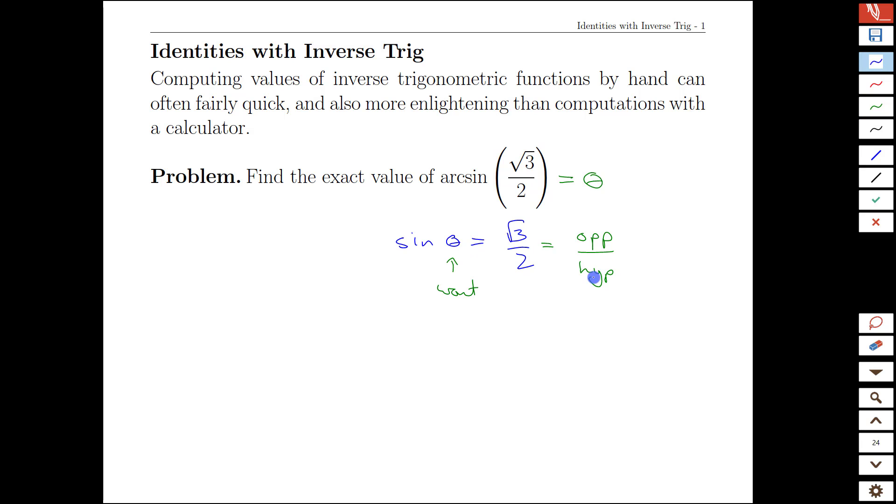Recalling that the sine is opposite over hypotenuse, you can actually draw a triangle with root 3 on the opposite side and 2 on the hypotenuse, and the angle here being the angle you're looking for. Now there's no way this is always going to work out exactly, but this triangle here should hopefully ring some bells, because this is the half of an equilateral triangle, which is 2, 1, 1, root 3 here, and that's the angle we're looking for. And so that angle is exactly 60 degrees or, in calculus, pi over 3 radians.